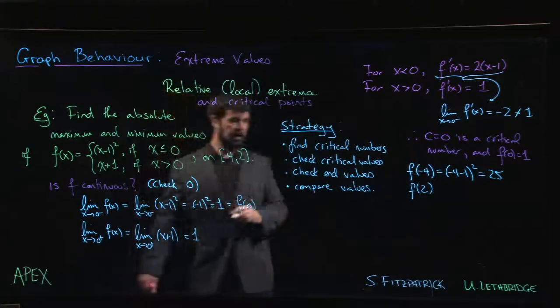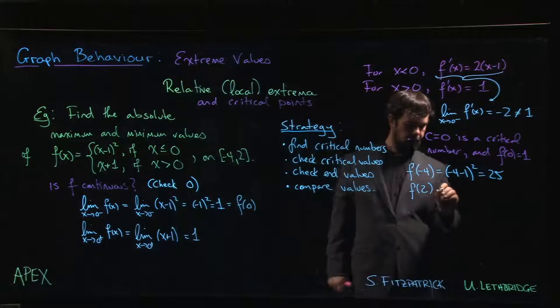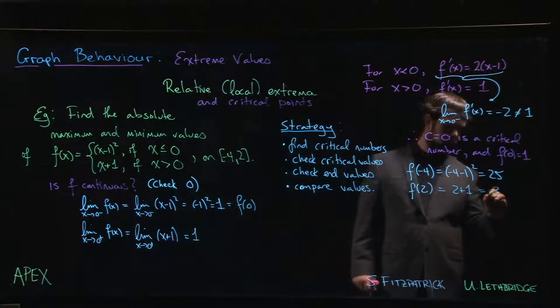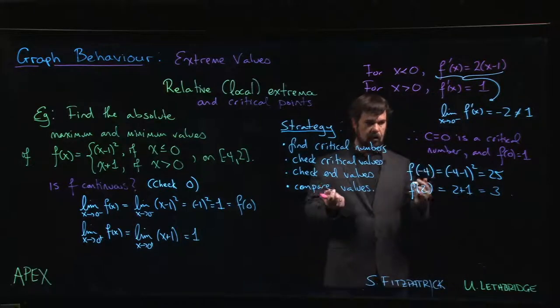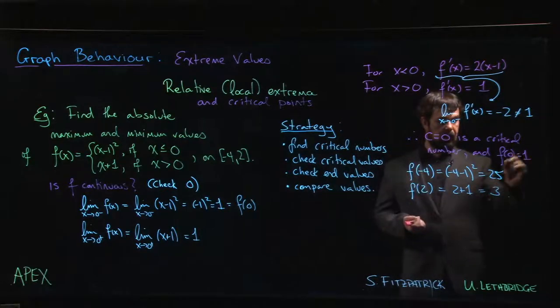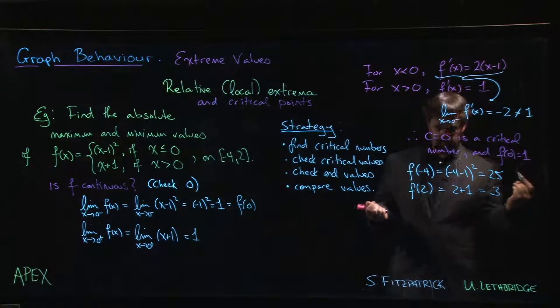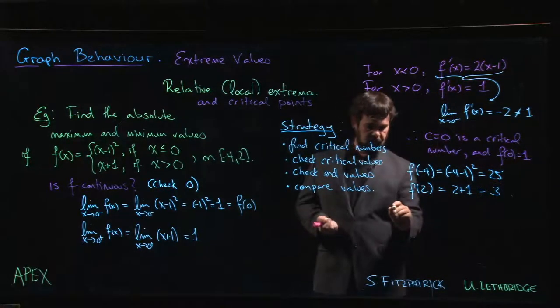At the other end point 2, 2 is bigger than 0, so we plug it into here, 2 plus 1, we get 3. Okay, so once again we list our numbers, we rank them, we decide which is biggest, which is smallest, and we can see that f has absolute minimum...